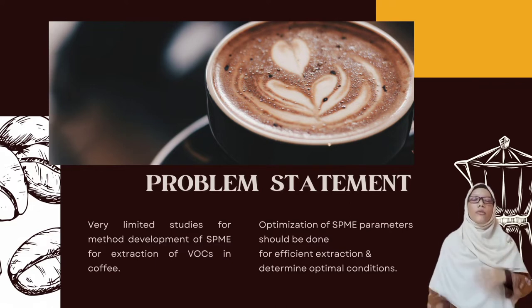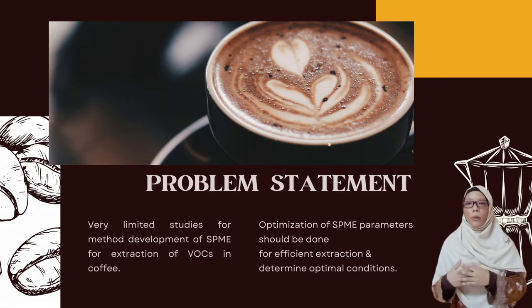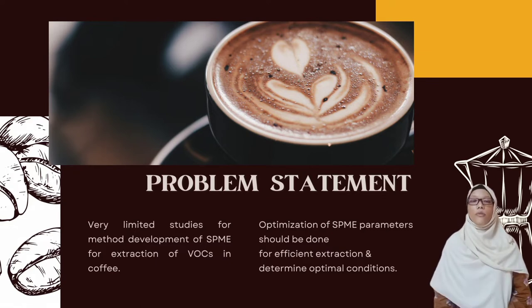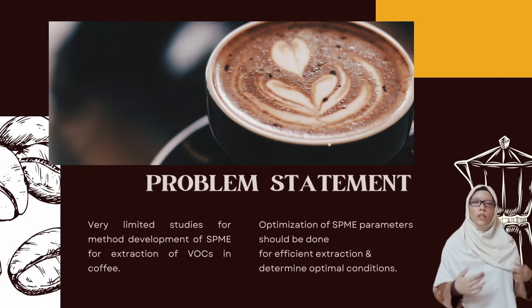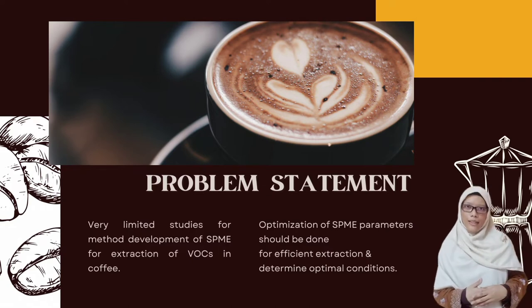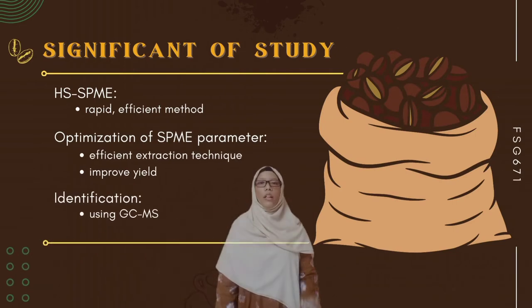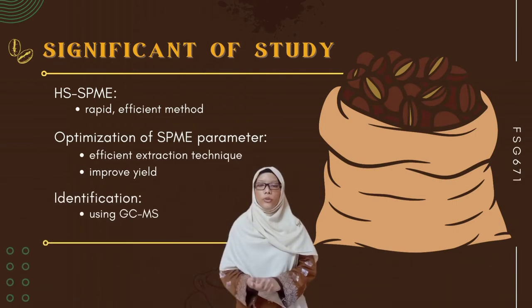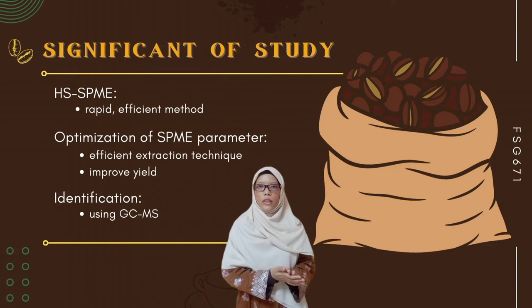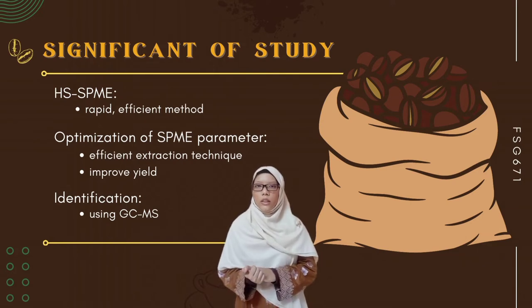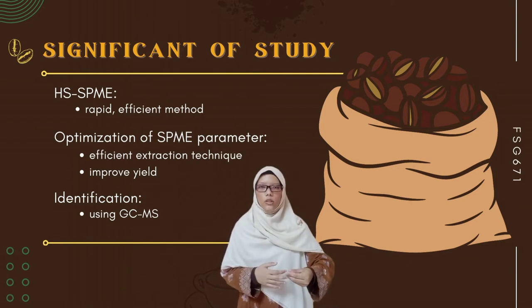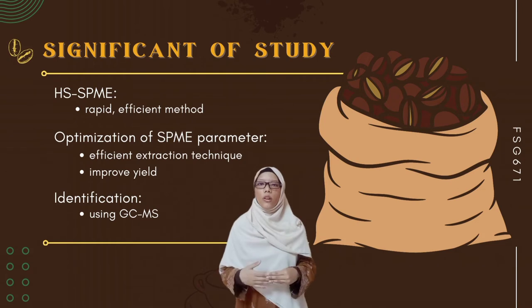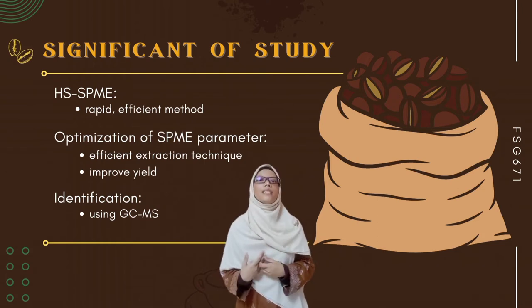There is very limited method development regarding SPME extraction for VOCs in coffee. This is why it is very important for researchers to conduct optimization of SPME parameters in order to determine optimal conditions for efficient extraction of VOCs in coffee. The significance of this study is that HS-SPME is used due to its rapidity and efficiency, and optimization of SPME parameters is conducted to increase its efficacy, simultaneously increasing the extraction yield. Additionally, identification of VOCs in the aroma of coffee is made possible via GCMS.